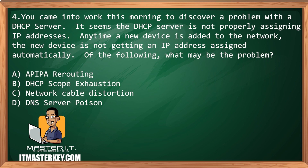You came into work this morning to discover a problem with a DHCP server. It seems the DHCP server is not properly assigning IP addresses. Anytime a new device is added to the network, the new device is not getting an IP address assigned automatically. Of the following, what may be the problem? APIPA rerouting, DHCP scope exhaustion, network cable distortion, DNS server poisoning.